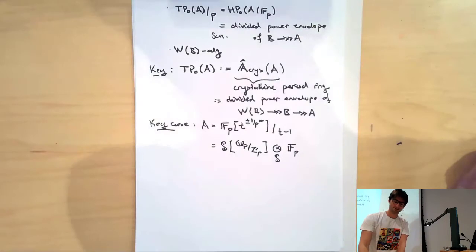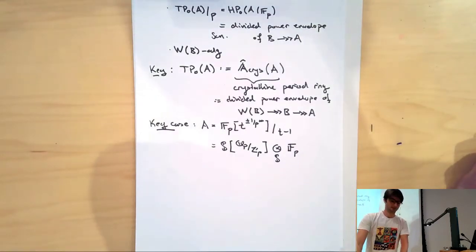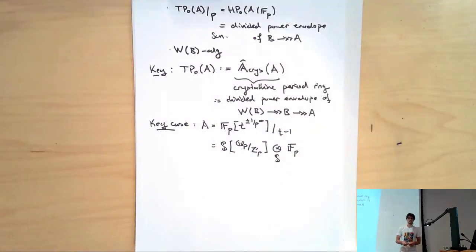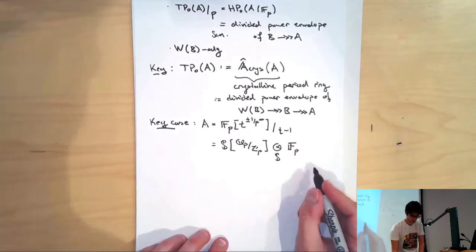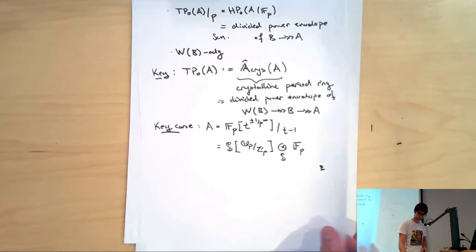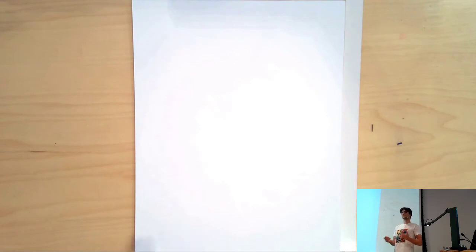Then you return to the general program: you understand the topological periodic cyclic homologies of all of the terms appearing in the Čech complex. By assembling that together, you get information in terms of TP of the smooth algebra, in terms of crystalline period rings, which — as their name suggests — are related to crystalline cohomology. So I just wanted to give some vague idea of how these quasi-regular semi-perfect rings enter the game and how the key is once again to do some local algebraic calculation of the TP zero of these sorts of rings. Let me move now onto the story in mixed characteristic.